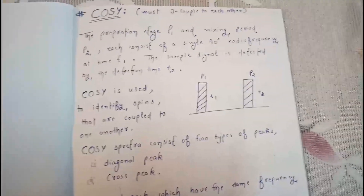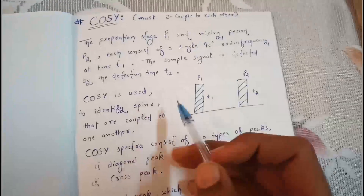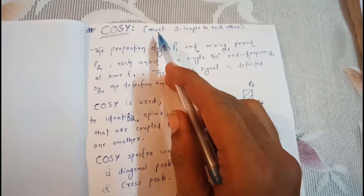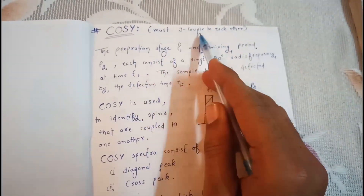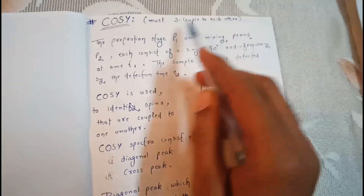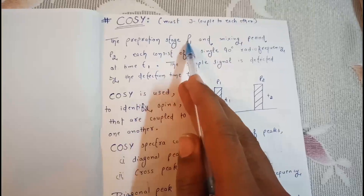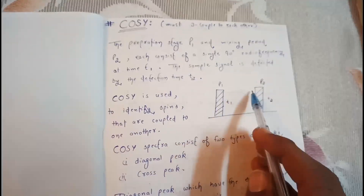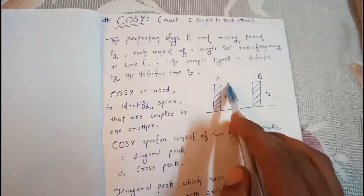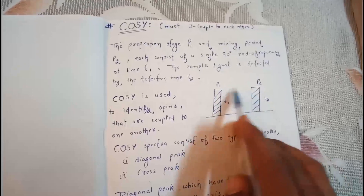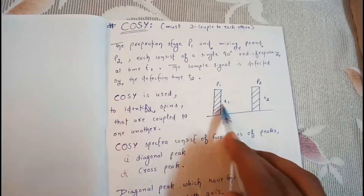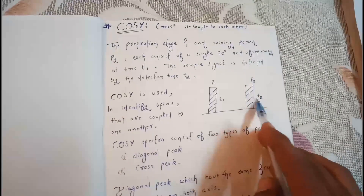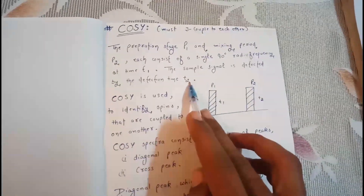Today we will discuss COSY. First, the nuclei must have J-coupling to each other. Next, there is a preparation stage P1 and a mixing period P2. Between P1 and P2 we have a mixing period. Each consists of a single 90-degree radio frequency pulse. After that, the sample signal is detected, which is described by time t2.